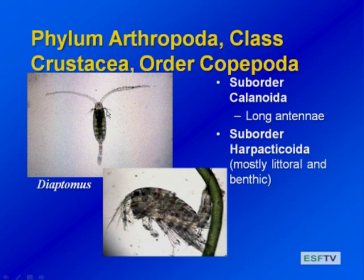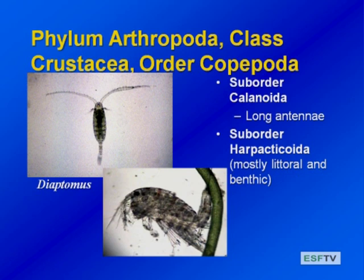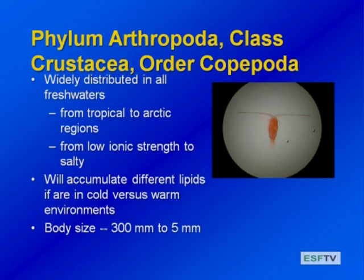You may also have heard of the suborder Harpacticoida. Here's a side view of this — looking at a dorsal view before, here you can see all of those legs extended. Many of the harpacticoids are living attached to substrates; that's part of why we won't talk about them as much in this zooplankton section, and some of them are also parasitic. Copepods are widely distributed in all fresh waters as well as in the oceans. In fact, copepods are the main herbivores on our planet — the main consumers of algae. There are more copepods than any other herbivore on the planet. In fresh waters, we see them from the tropics up to Arctic regions, from really dilute low ionic strength water to very salty water.